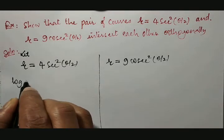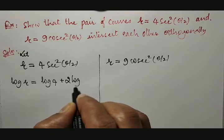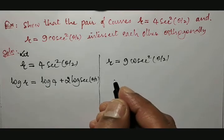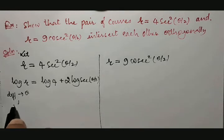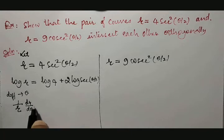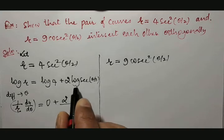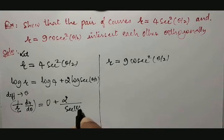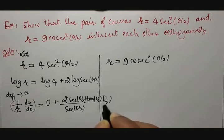Since these are polar curves, first apply log on both sides. Then it is: log r = log 4 + 2 · log(sec(θ/2)). Then differentiating with respect to θ, we get: (1/r)(dr/dθ) = 0 + 2 · [1/sec(θ/2)] · sec(θ/2) · tan(θ/2) · (1/2), because the differentiation of θ/2 is 1/2.